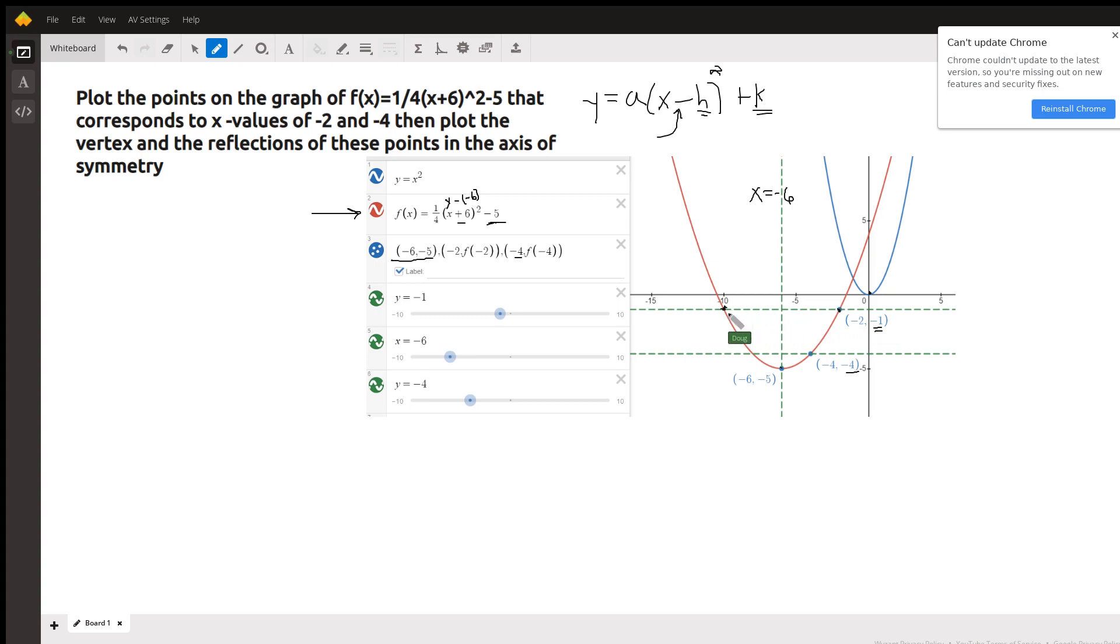these points right here are the endpoints of the segment that are on the line y equals negative one. And for the endpoints of that segment, that point right there, which is on the axis of symmetry, is the midpoint in that segment. In other words, this segment has the same length as that segment.